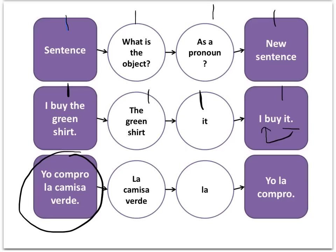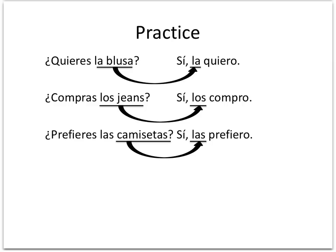Let's look at that same example in Spanish. Yo compro la camisa verde. I'll ask myself, ¿Qué compro? What am I buying? La camisa verde. La camisa verde is to be replaced with la because it's feminine, and it's going to go in front of the conjugated verb. Yo la compro.